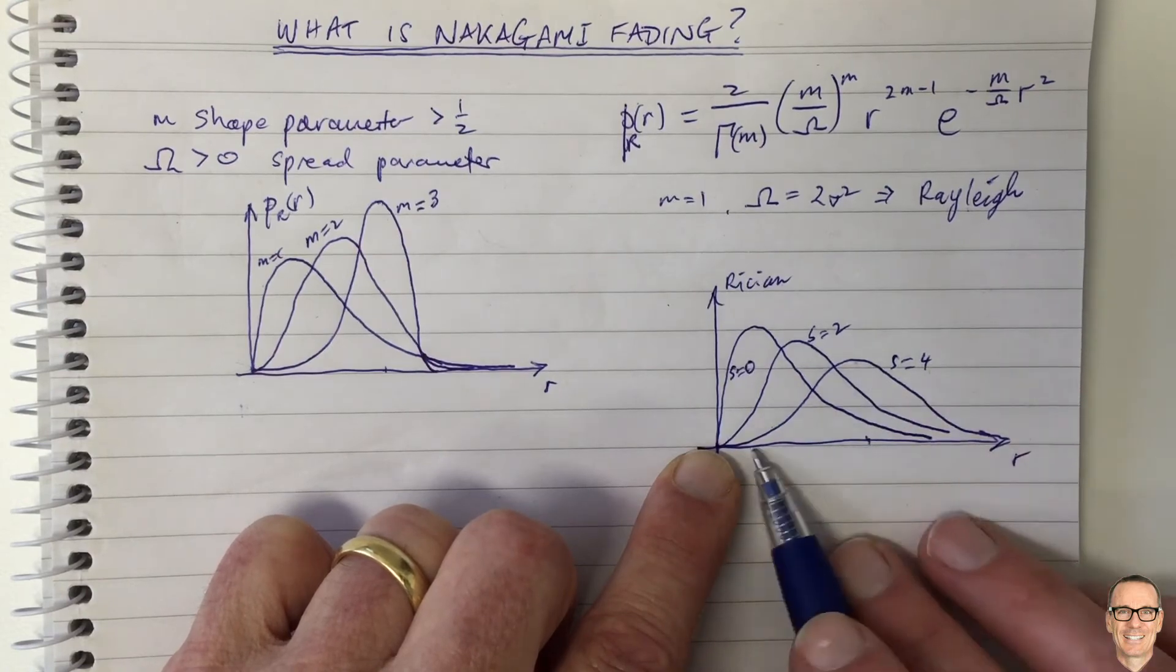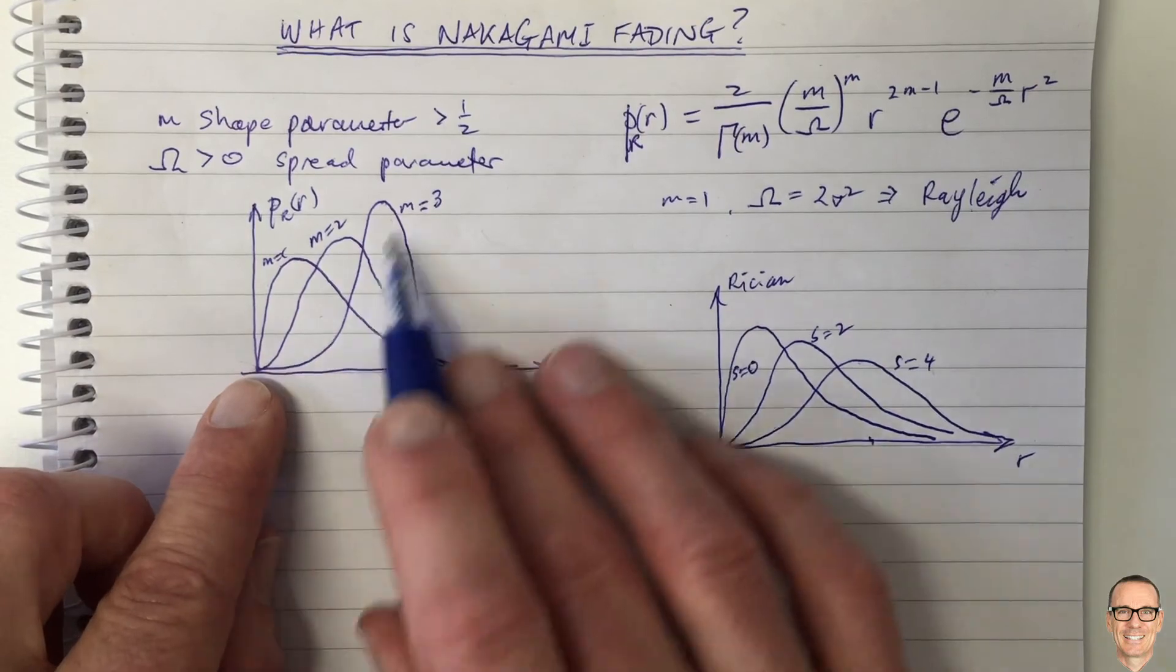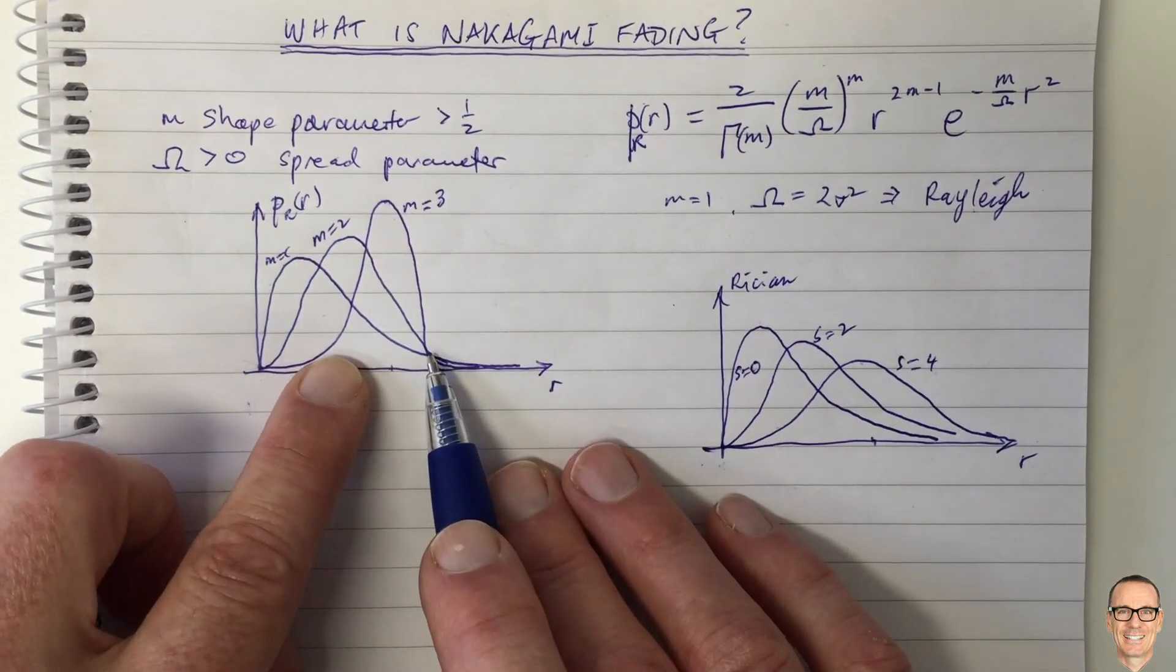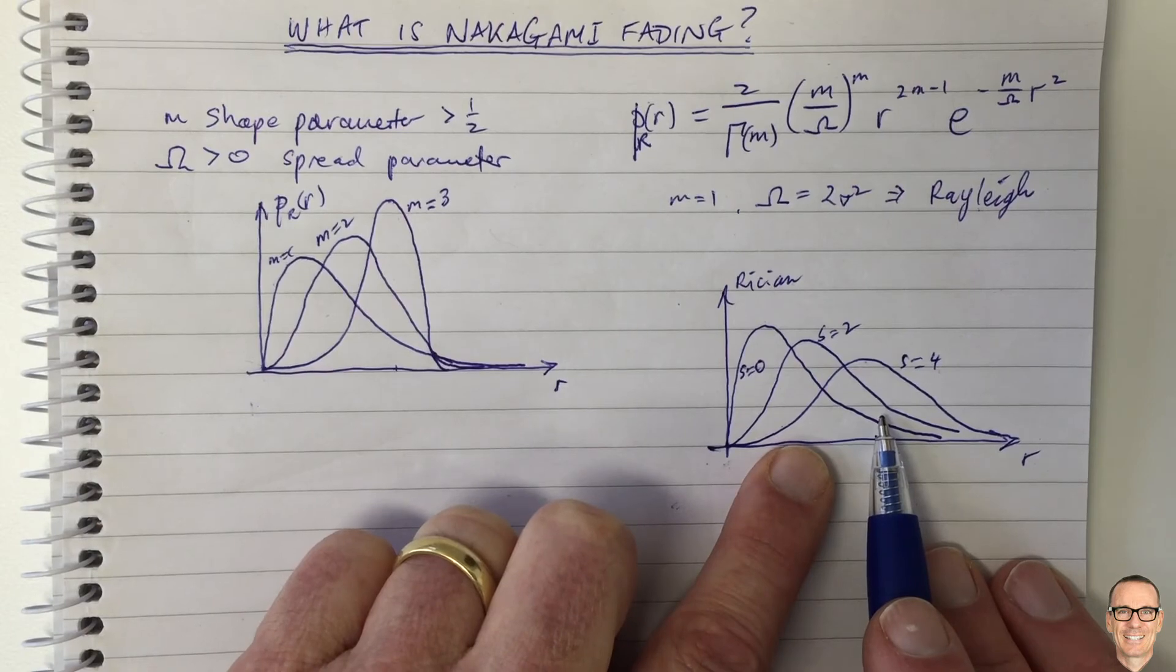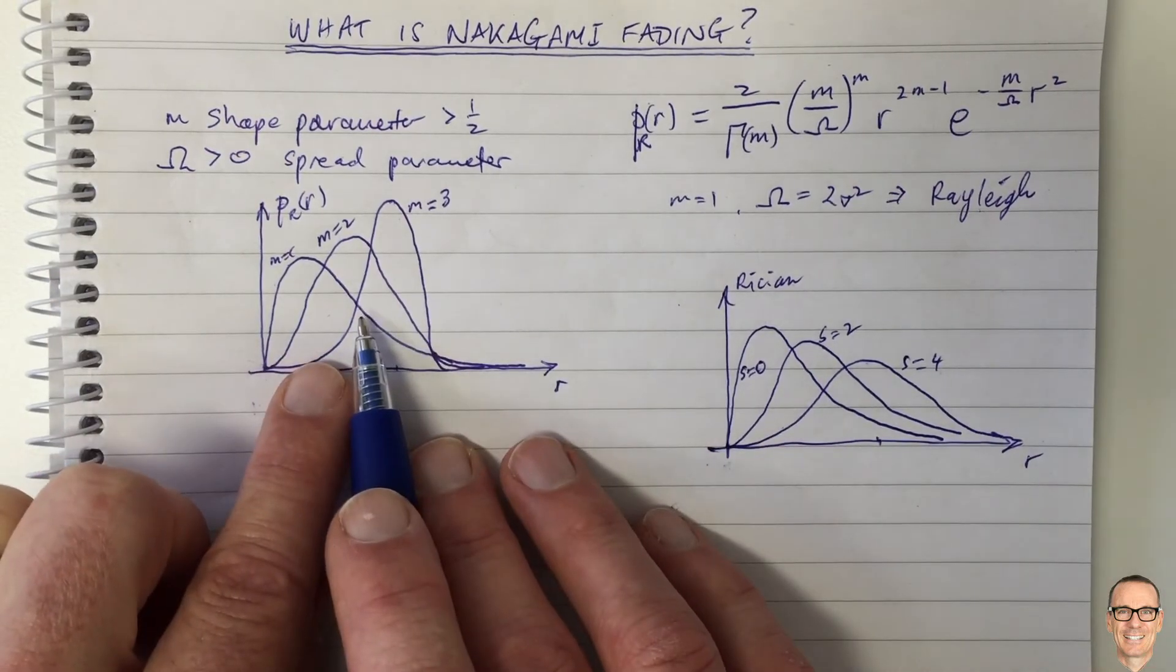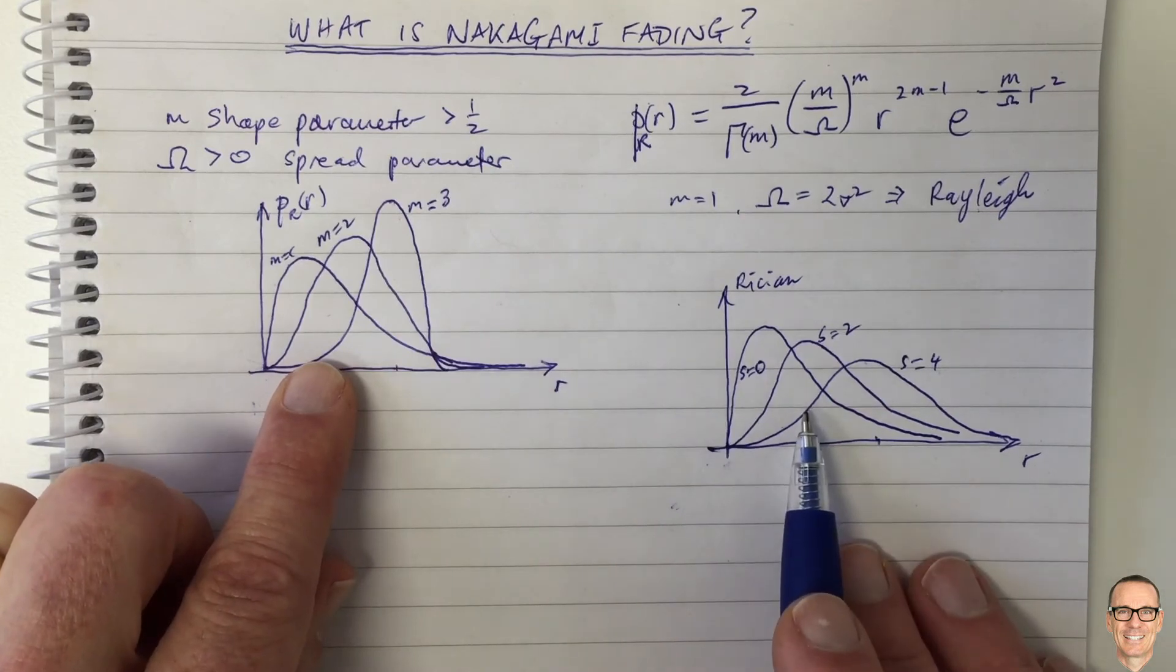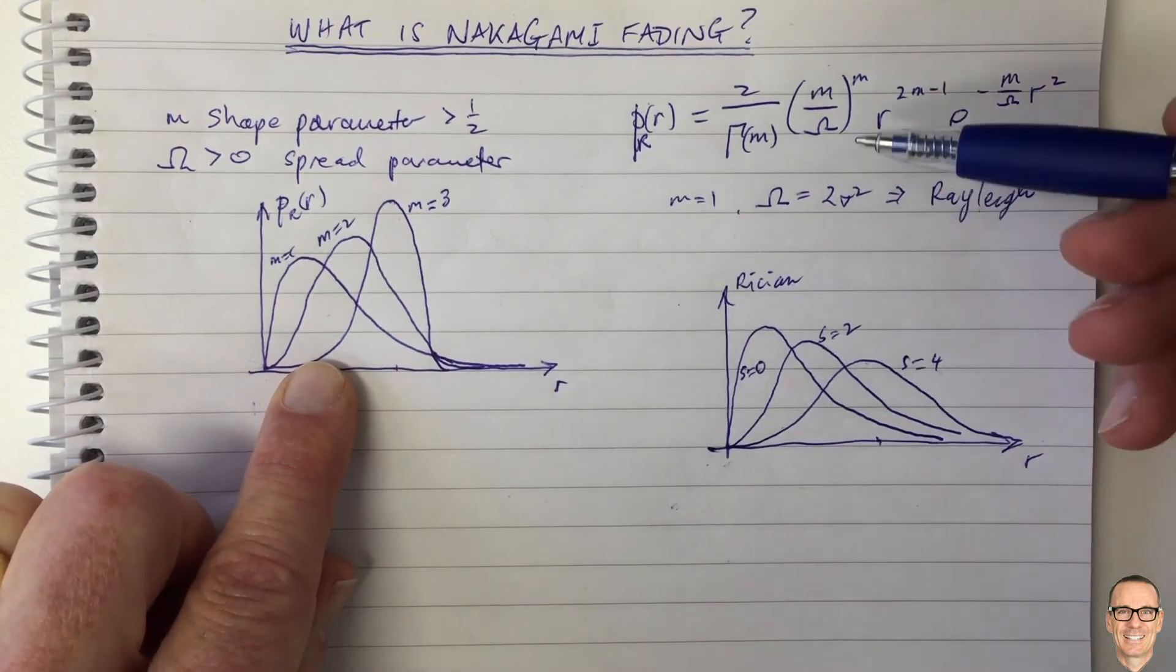And with Nakagami, you also get a move to the right as you increase the M parameter, but it moves to the right and becomes narrower. And so in some cases, Ricean might fit the data for the measurements that you make in some environments with particular multi-path characteristics, in some cases Nakagami. And that's really the difference between these two scenarios, Nakagami and Ricean.